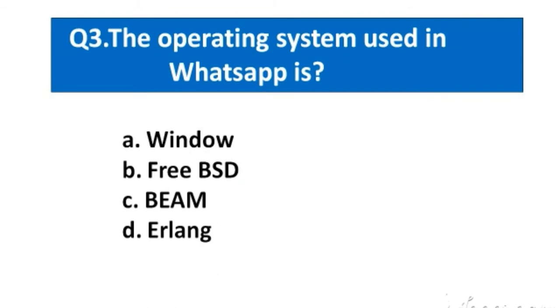Question number 3. The operating system used in WhatsApp is. Options A. Window, B. FreeBSD, C. Beam, D. Erlang.